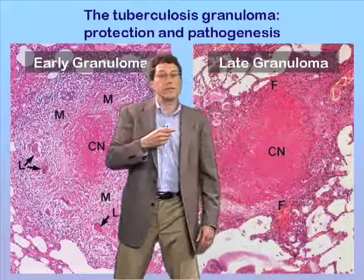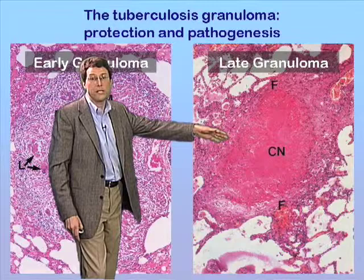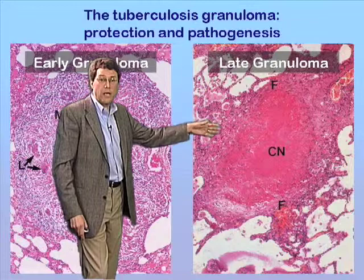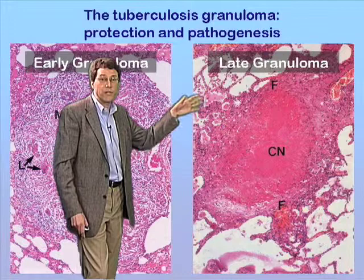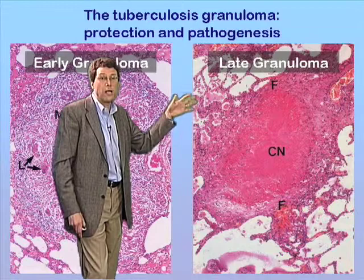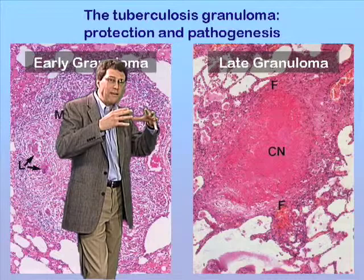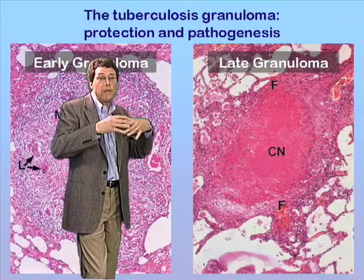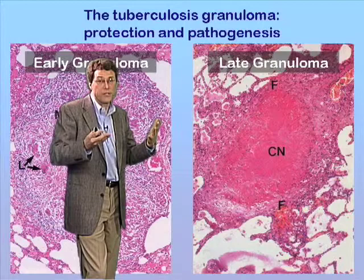Somewhat later, as infection progresses, caseating necrosis can become quite extreme so that a large core develops within the lesion where there are essentially no intact cells whatsoever. There's still a mantle of heavily parasitized macrophages surrounding that core, but now, further out, in place of lymphocytes, we largely see fibroblasts laying down a matrix of collagen, fibrin, and other extracellular matrix fibers. It's as though the host is trying to contain the infection, but this containment within the granuloma may prevent the development of an optimal immune response against the pathogen.